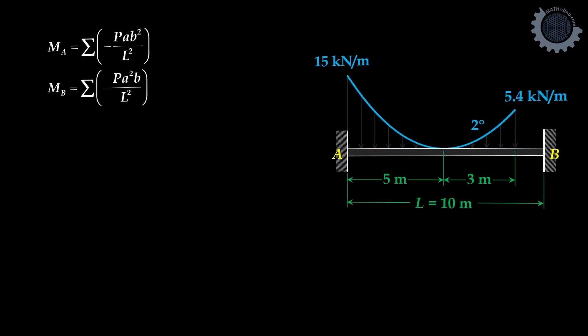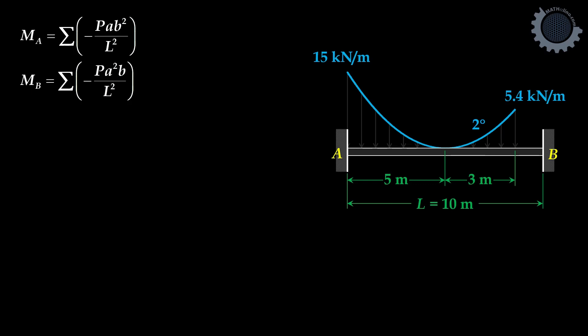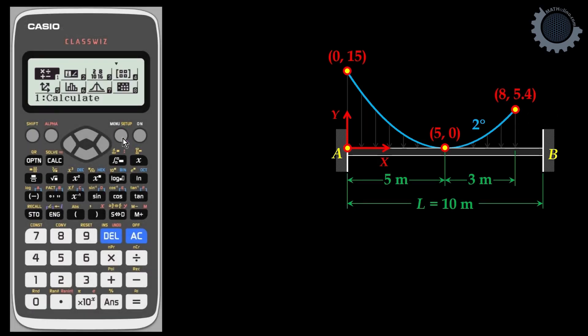I know we prefer the use of calculator to develop the equation of the parabola. In that case, we are going to take point A as our origin. So we have this point 0, 15, this point is 5, 0, and this point is 8, 5.4. Let's go to menu and then 6 for statistics.